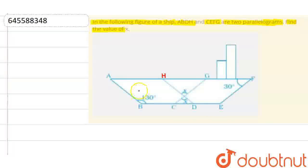Now if this is ABDH parallelogram, it means adjacent angles will be supplementary angles. That means I can say that angle HDC, this angle, will be 180 minus 130. That means 50 degrees. This angle will be 50 degrees.